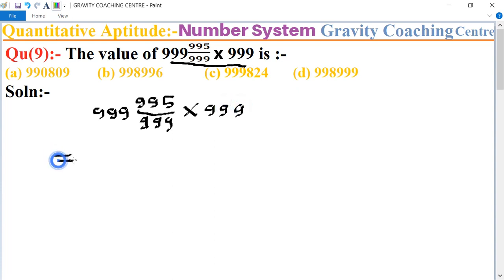Equal to - first we separate the numbers: 9999 plus 995 upon 999, multiply 999.